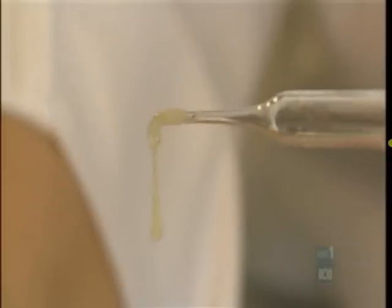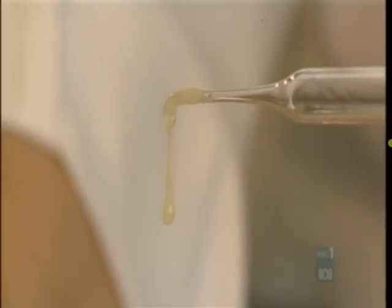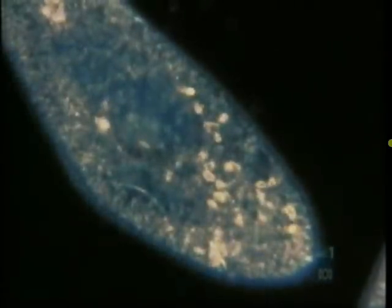So what does this stringy stuff actually do in a cell? The answer is that it's simply a store of information. Locked away in the nucleus, it's like a quiet library in a busy city. The real activity of a cell is outside the nucleus. Out in the cytoplasm, metabolism goes on apace.